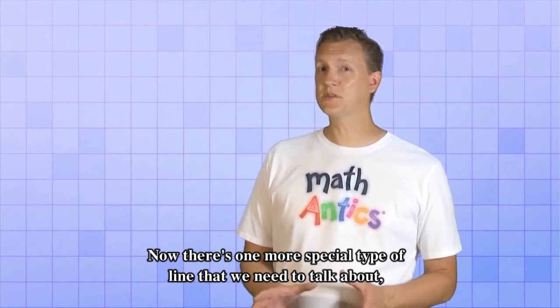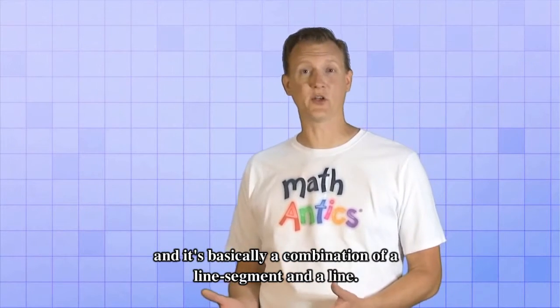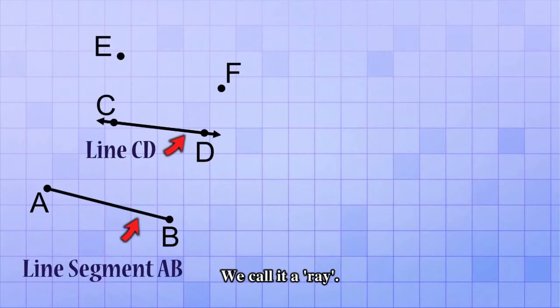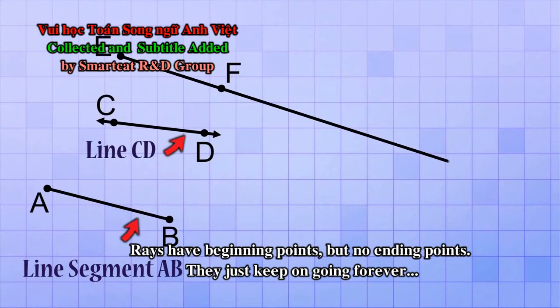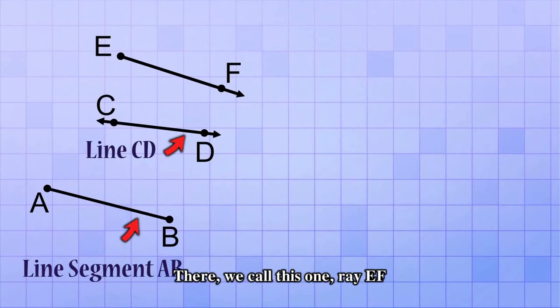Now there's one more special type of line that we need to talk about. And it's basically a combination of a line segment and a line. We call it a Ray. Rays have beginning points, but no ending points. They just keep on going forever, but only in one direction. So we only put an arrow on the end that keeps going. There. We call this one Ray EF.